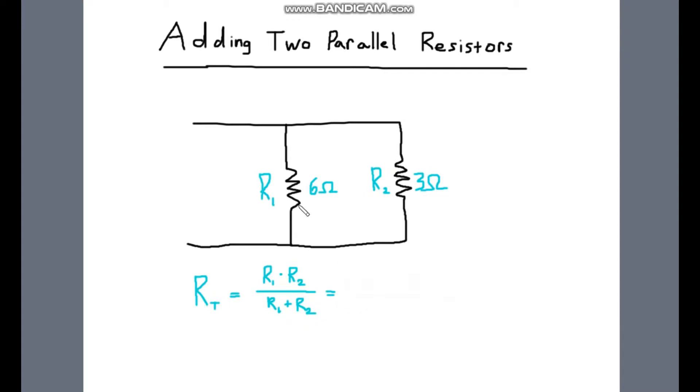So here we have R1 is 6 ohms, R2 is 3 ohms. So we're going to take R1 which is 6 ohms and multiply it times R2 which is 3 ohms, and then we're going to divide that by 6 ohms plus 3 ohms.